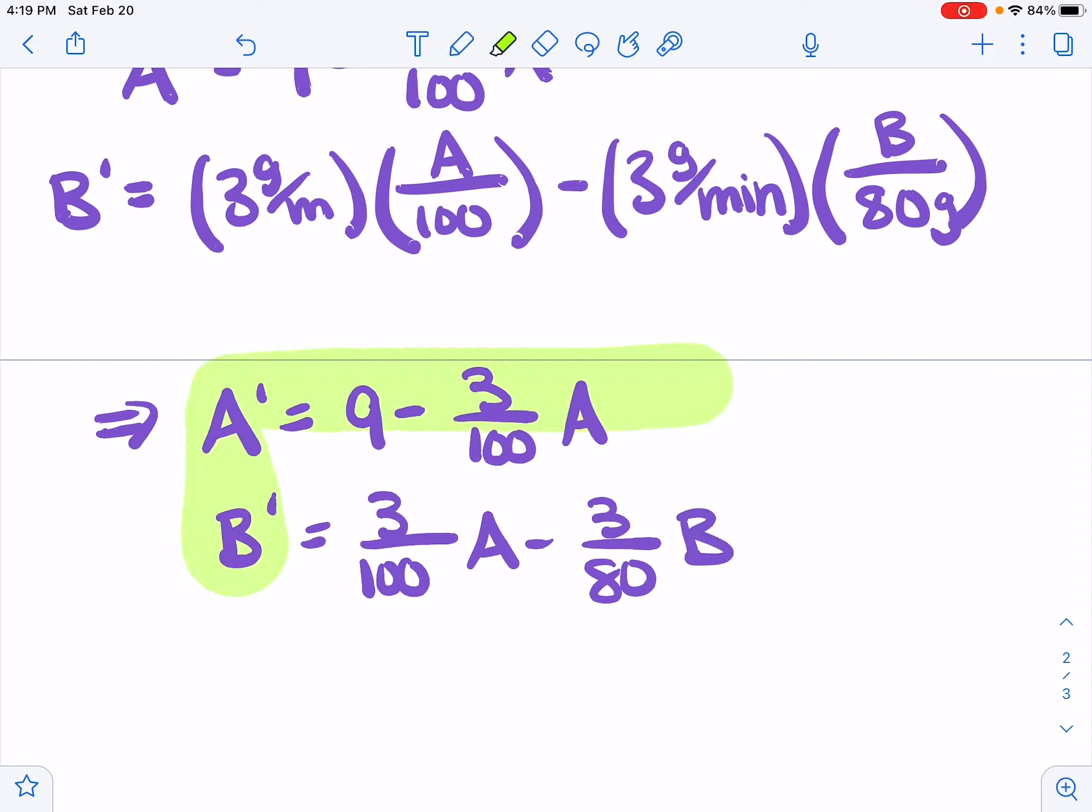That's the setup for this problem. We now have the system as an initial value problem. We can write in the initial conditions. A of zero, I believe, was 10, and B of zero was 5. So we've got our initial value problem, one for A and one for B.